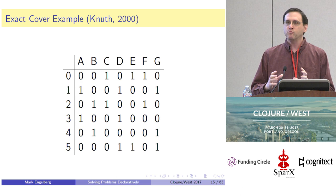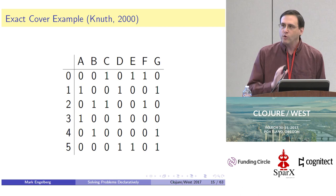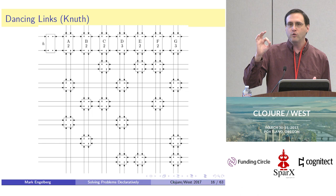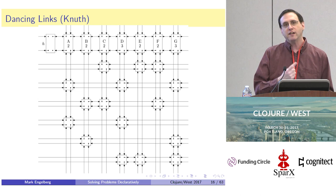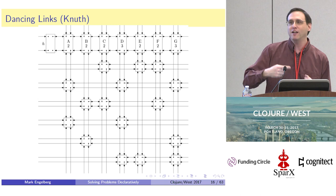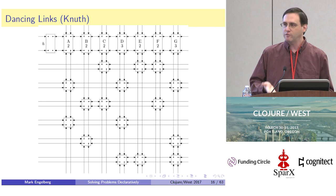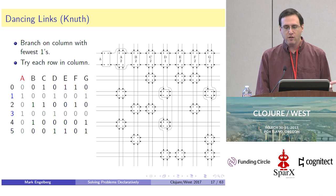Using that as a model, Knuth came up with a really beautiful data structure and algorithm he called the Dancing Links algorithm. He takes the matrix and turns it into a data structure with a node for every one in that matrix. Every row is connected by a circular doubly linked list, every column is connected by a circular doubly linked list, and there's a bunch of column headers at the top keeping track of how many ones are in each column, also connected in circular doubly linked lists.